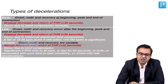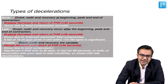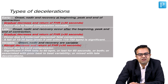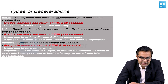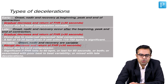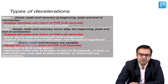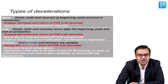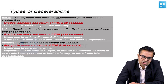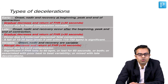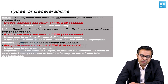Reiterating: types of deceleration include early, late, and variable. Early — onset, nadir, and recovery is at the beginning, peak, and end of contraction; gradual decrease and return of fetal heart rate taking more than 30 seconds; occurs due to head compression, normally. Late — onset, nadir, and recovery after the beginning, peak, and end of contraction; gradual decrease and gradual return lasting more than 30 seconds; occurs due to maternal, placental, and fetal compromise.